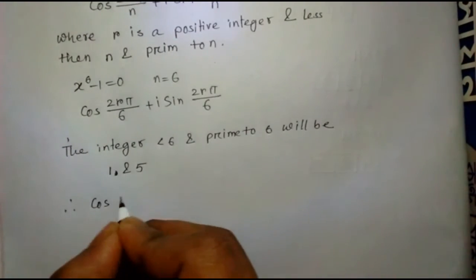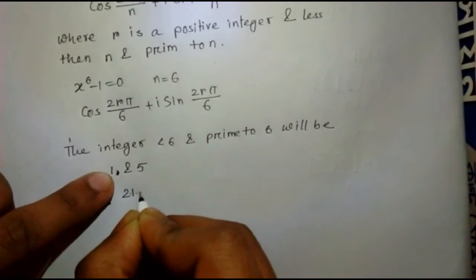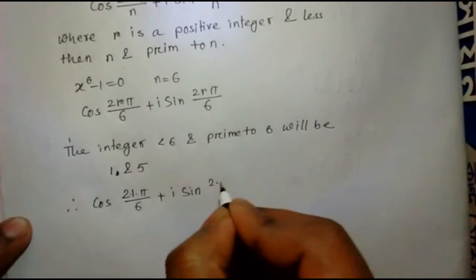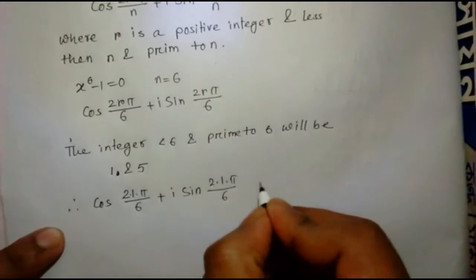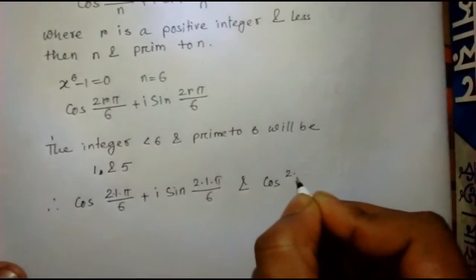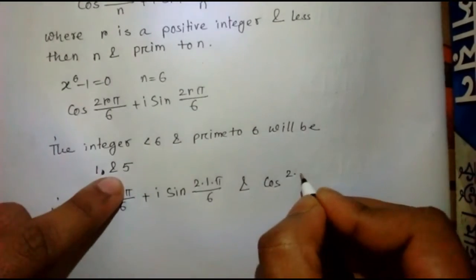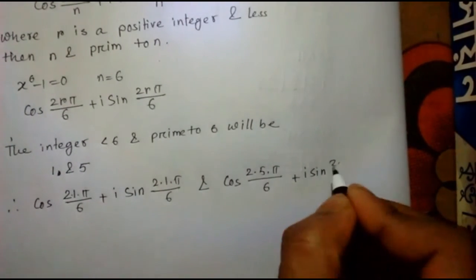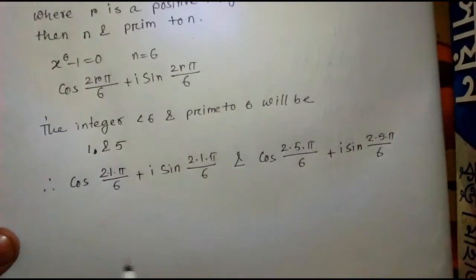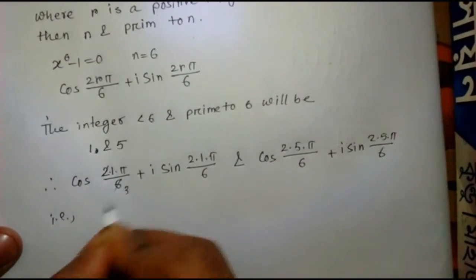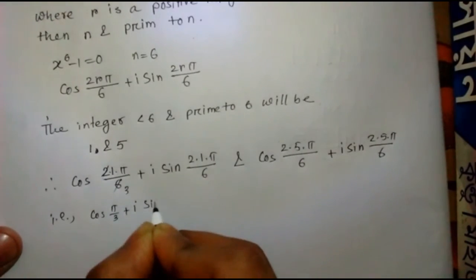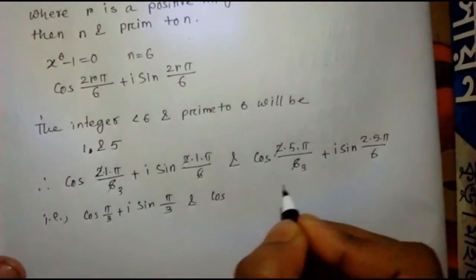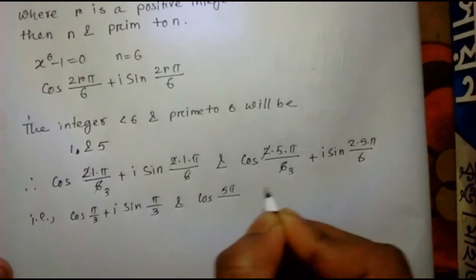Taking r equals 1: cos(2·1·π/6) plus i·sin(2·1·π/6). Taking r equals 5: cos(2·5·π/6) plus i·sin(2·5·π/6). These simplify to cos(5π/3) plus i·sin(5π/3) and cos(5π/6) plus i·sin(5π/6).